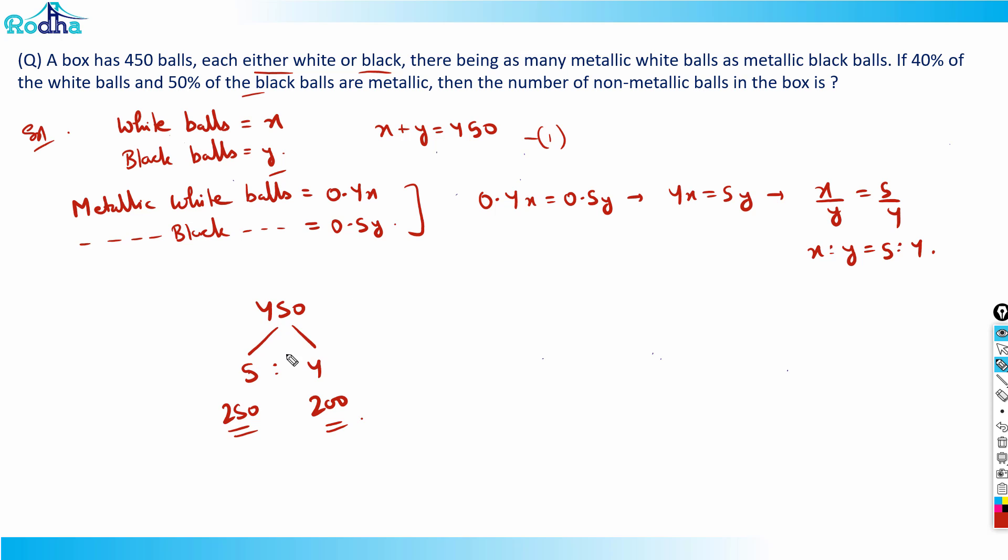The number of non-metallic balls in the box I need to find. If X is 250 and Y is 200, so total there are 450 balls. Number of non-metallic balls will be how much? We can easily calculate this since we have the metallic white balls.